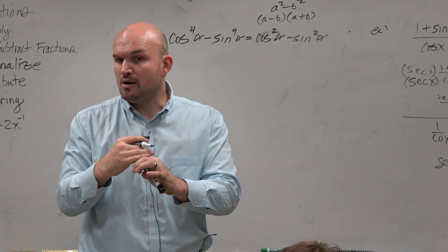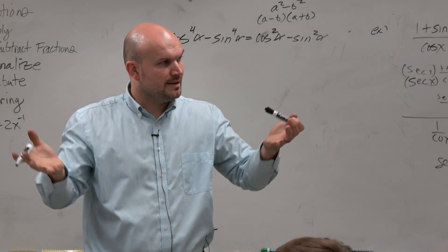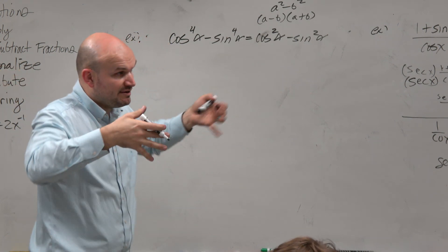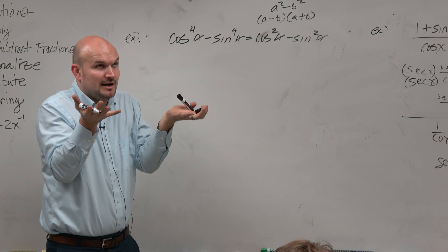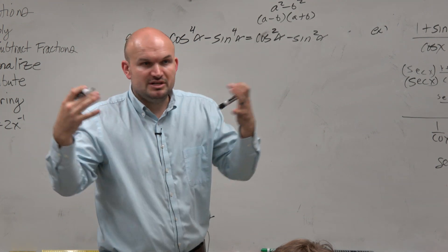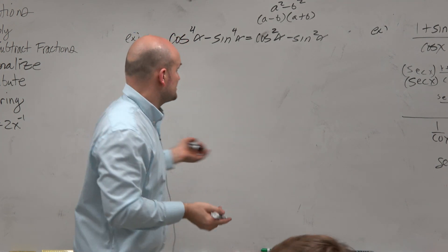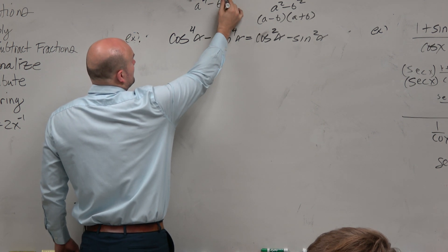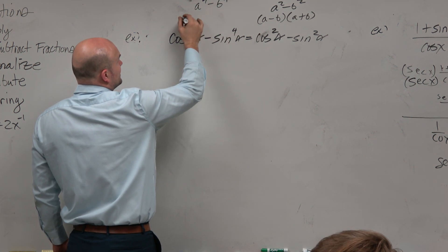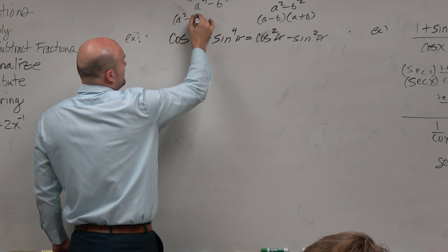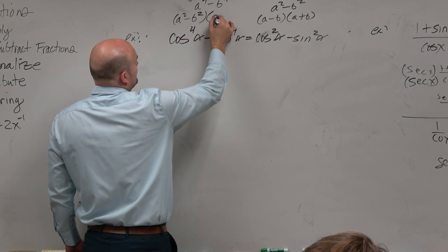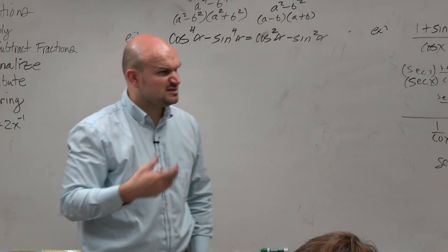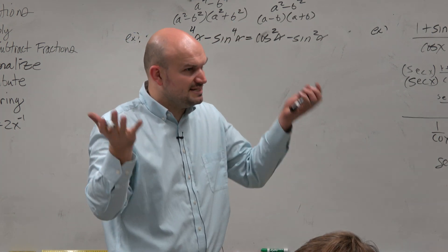And if you remember from chapter two, what we learned is, remember, we did something similar to this. We knew our factoring techniques, but we just raised the powers. So when we raise the powers of our polynomials, we just raise the powers of our factors. For instance, if I have a to the fourth minus b to the fourth, I can factor that down into a squared minus b squared times a squared plus b squared. Same process — we're just raising the powers.